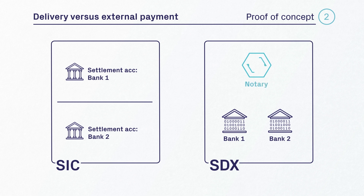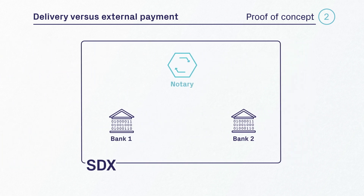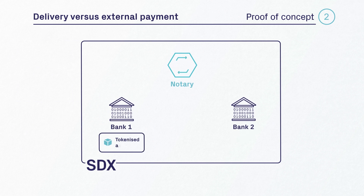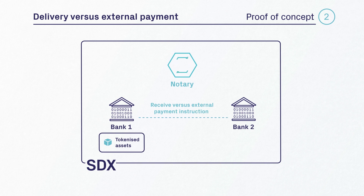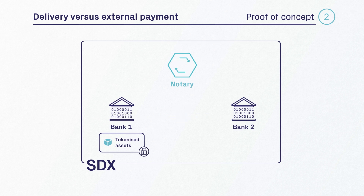To initiate a bilaterally agreed transaction, Bank 1, which is the seller of tokenized assets against payment in SIC balances, enters a delivery versus external payment instruction. Bank 2 is the buyer of tokenized assets against payment in SIC balances and enters a receive versus external payment instruction into the SDX platform. If the instructions match, a reservation request is automatically triggered for the tokenized assets.